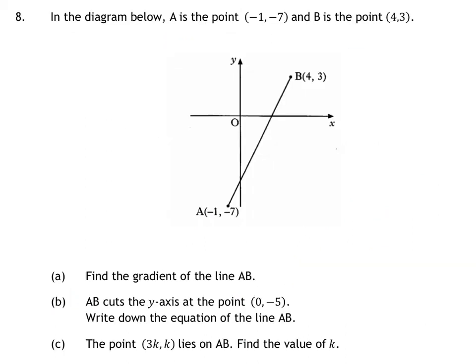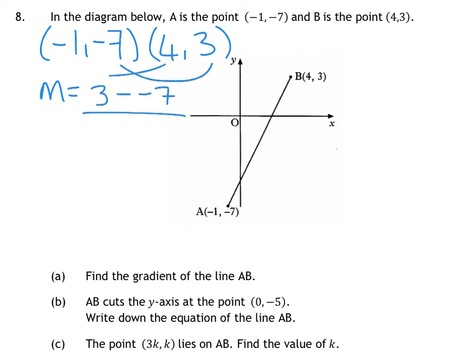Question 8 wants the equation of a line. It asks for the gradient first of all. So gradient between two points is, I'm going to come up here to do it. So I've got my two coordinates, minus 1, minus 7, and 4, 3. Your gradient is y2 minus y1, so 3 minus minus 7, all over 4 minus minus 1, which ends up with both pluses. So you've got 10 over 5, which is 2. So my gradient is 2, so that is part A.